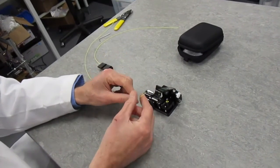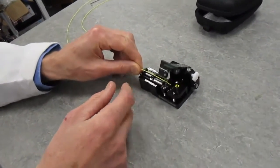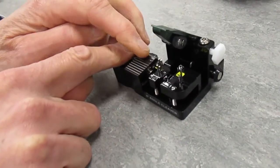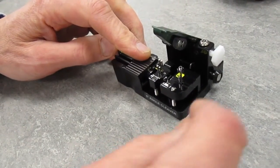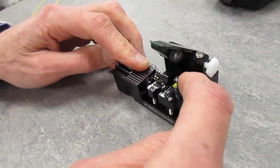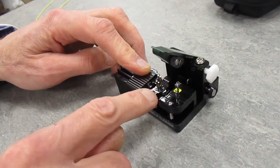I take some strip fiber, put it into the cleaver, hold it in position with the holder, then to cleave I push the lever downwards so the fiber is pushed onto the sharp diamond.